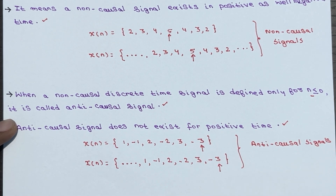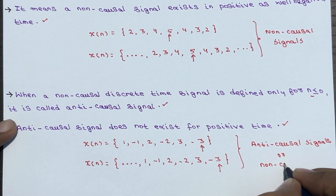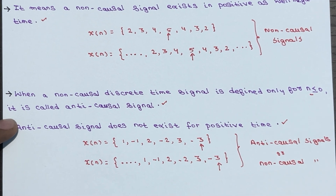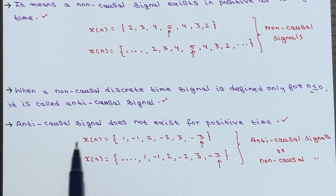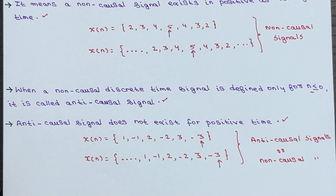You can also call anti-causal signals non-causal signals. You have to understand one thing: all anti-causal signals are by default non-causal signals. But all non-causal signals are not anti-causal. An anti-causal signal does not exist for positive time, whereas a non-causal signal exists in positive as well as in negative time domain.